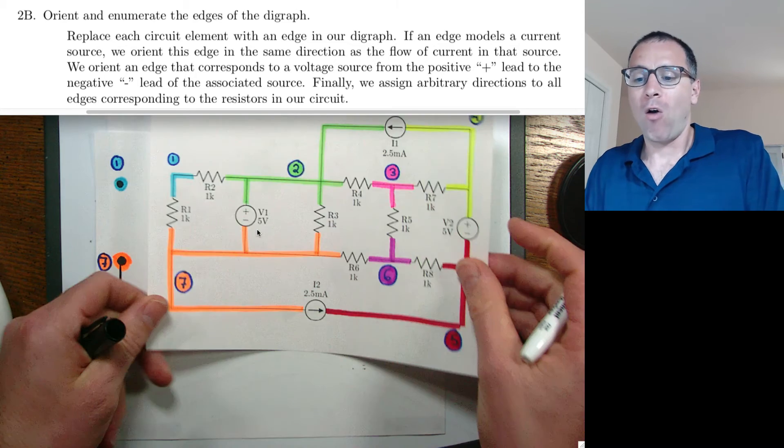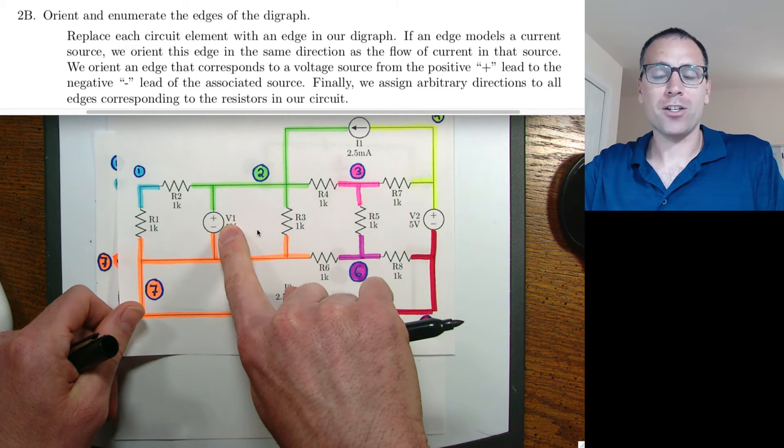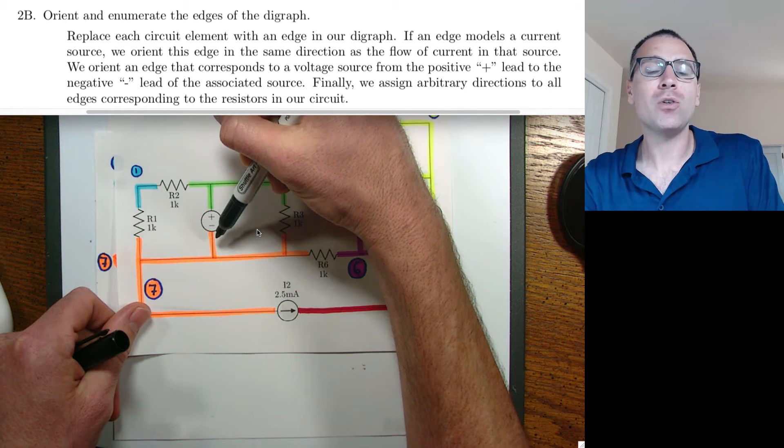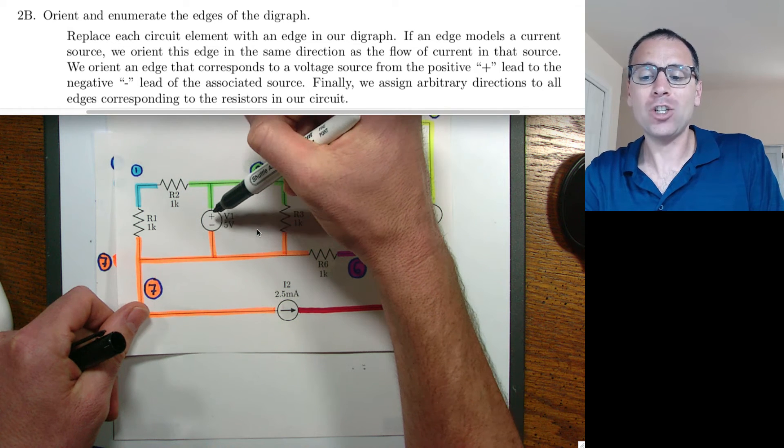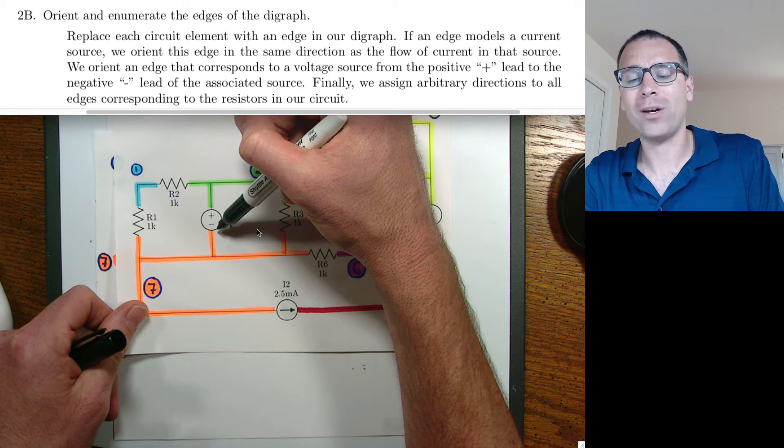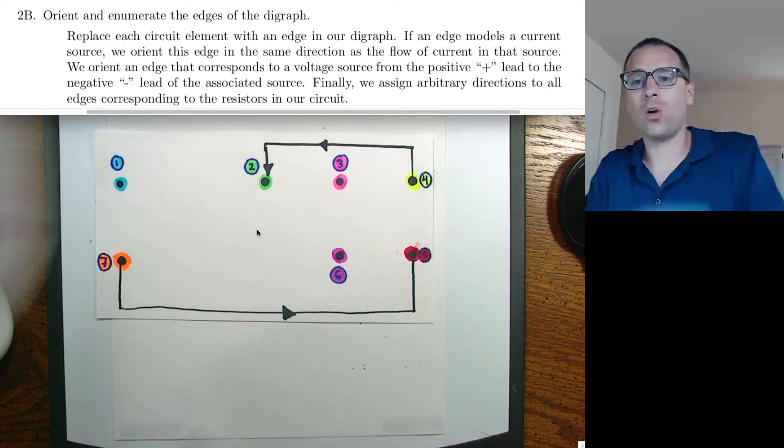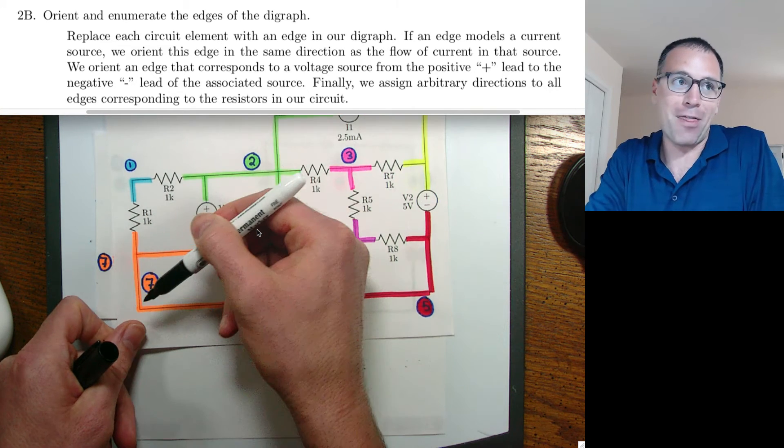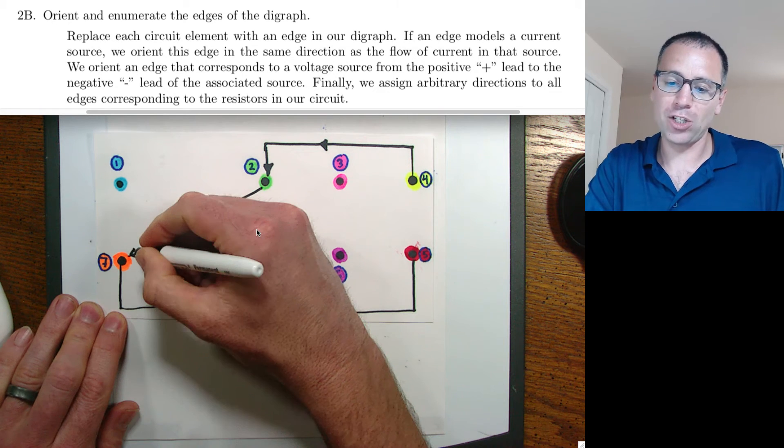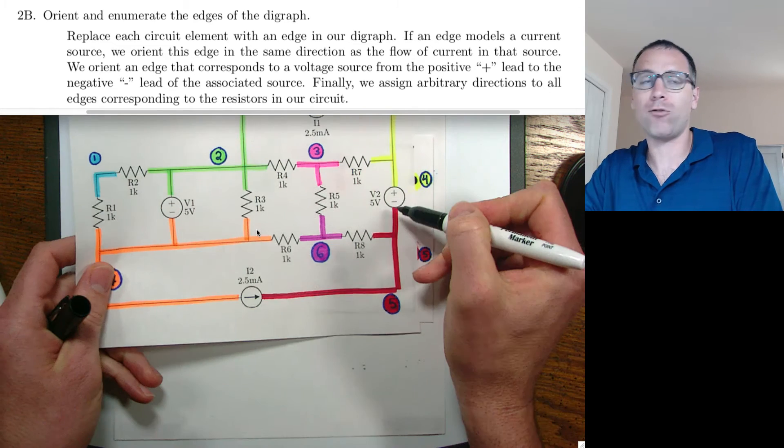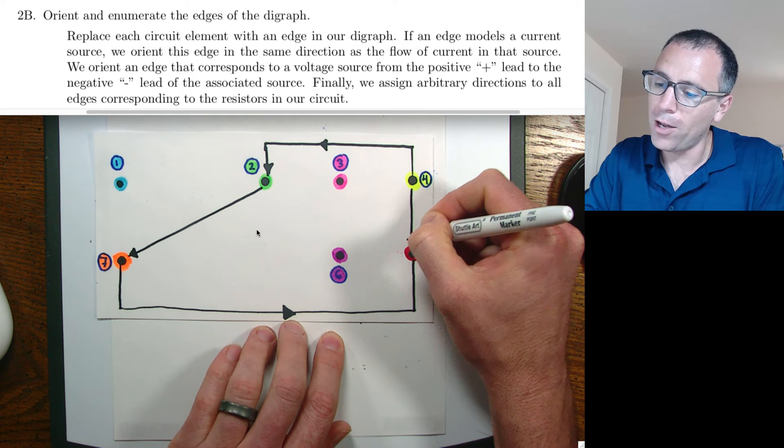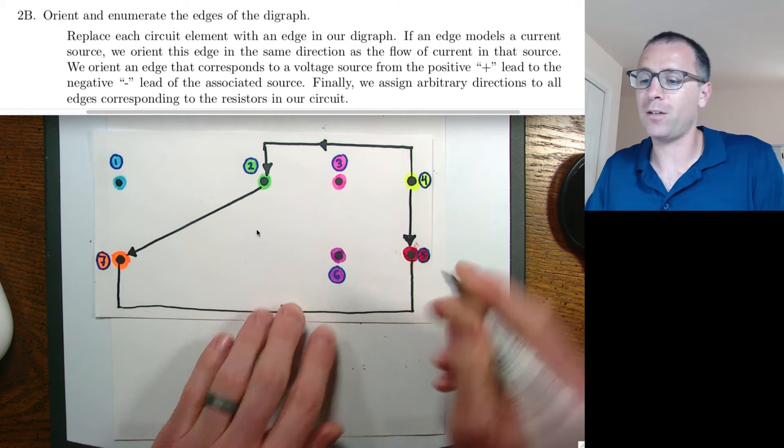Rule number two, for every voltage source in the circuit, connect those two nodes in the direction from positive to negative. Nerdy mathematicians would say the initial point of the directed edge is the positive node and the terminal point is the negative node. So specifically here, we see that we could go from 2 to 7 in that direction. We'll go ahead and say from 2 to 7 in that direction. We're going to do the same thing for this voltage source from 4 to 5 in that direction. So from 4 to 5, we follow the direction from positive to negative.